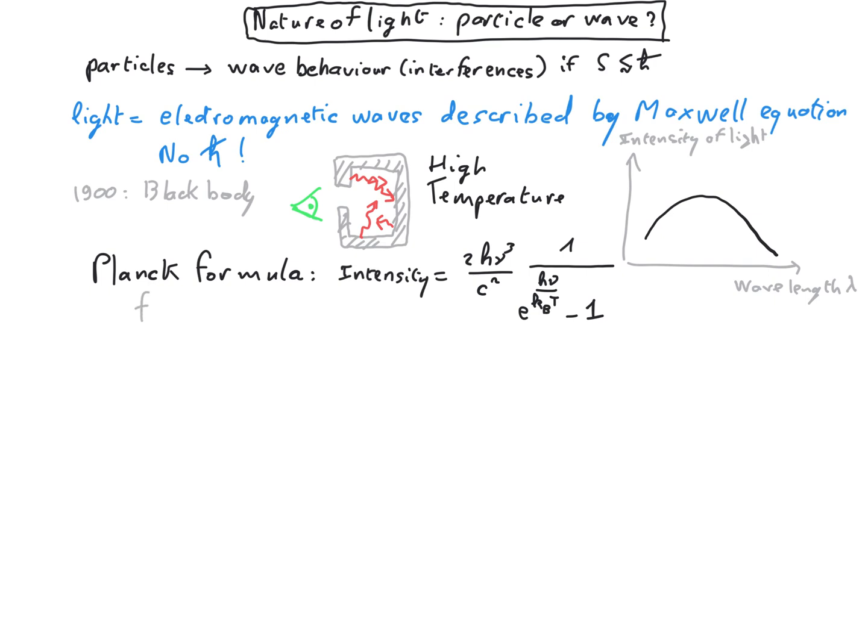Where nu is the frequency of the light and it's expressed as c divided by the wavelength lambda. And c is the speed of light.